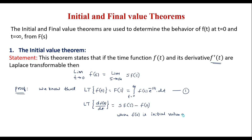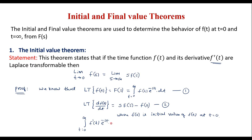Here, f(0) is the initial value of f(t) at t equal to 0. Now, from the definition of the Laplace transform, equation 2 can be represented as: the Laplace transform of df(t)/dt is the integral from 0 to infinity of f'(t)·e^{-st} dt, which equals s·F(s) minus f(0). We will call this equation number 3.